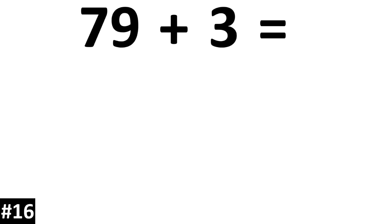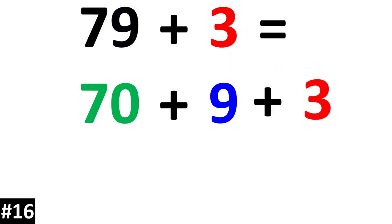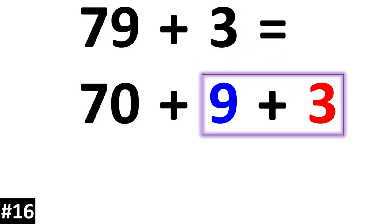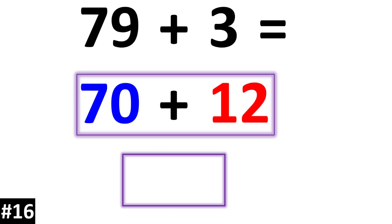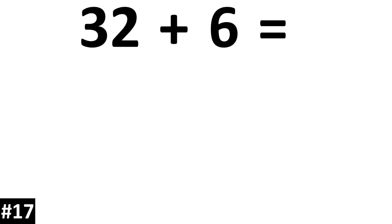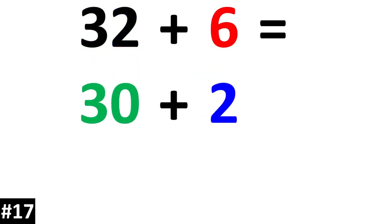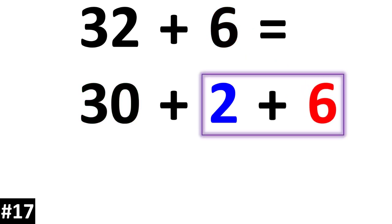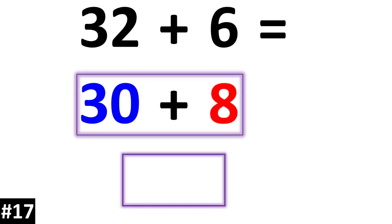79 plus 3. 79 is the same thing as 70 plus 9. If we add the 3, 9 plus 3 is equal to 12. And 70 plus 12 is equal to 82. Next, 32 plus 6. 32 is the same thing as 30 plus 2. If we add a 6, 2 plus 6 is equal to 8. 30 plus 8 is 38.